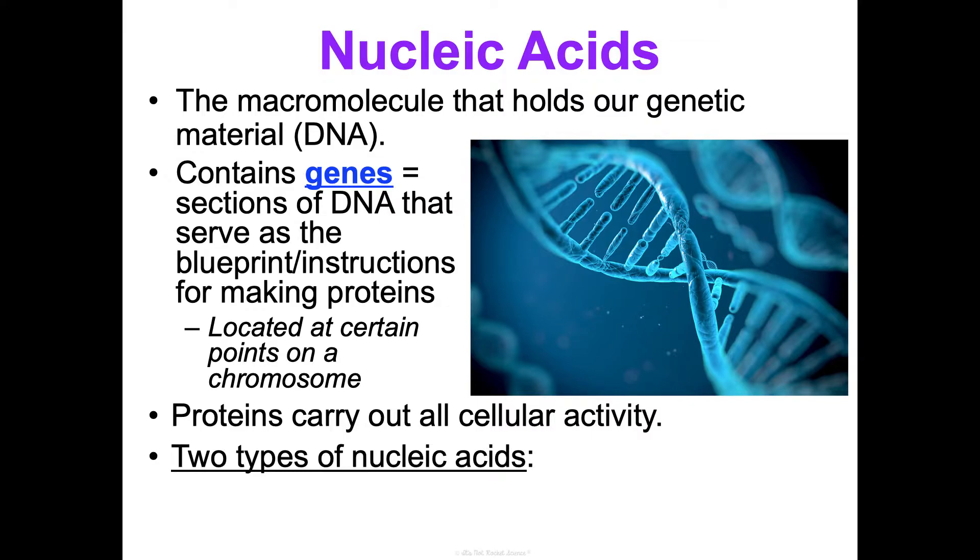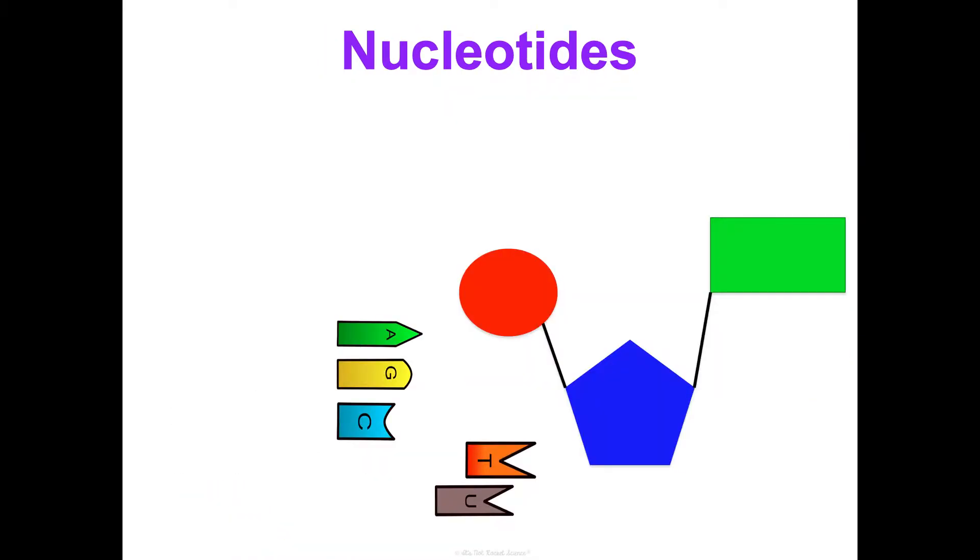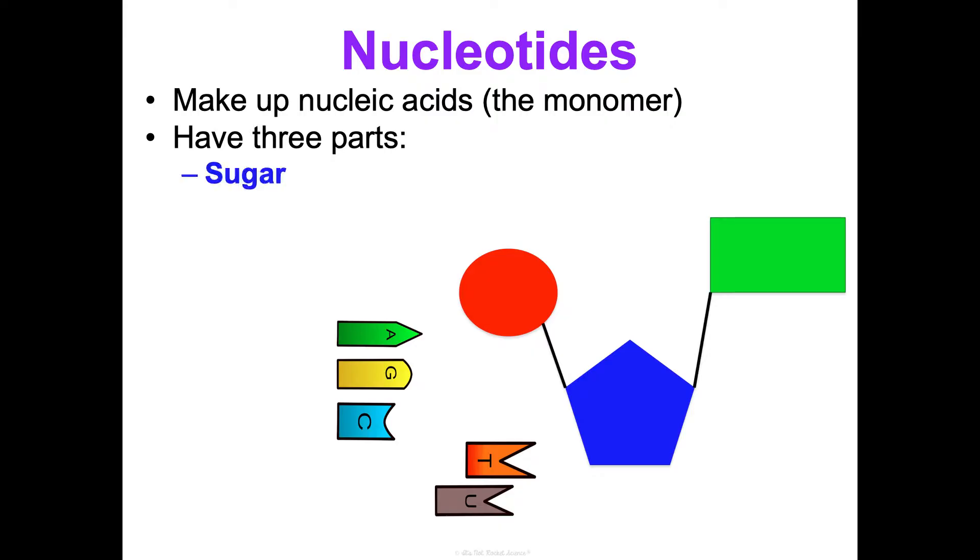There are two types of nucleic acid: DNA or deoxyribonucleic acid, and RNA which is ribonucleic acid. Both are really important and we'll talk about both in this concept. If you remember, the monomer of nucleic acids are nucleotides - nucleotides are just what makes them up.